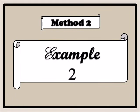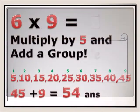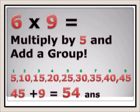Let's go to method two: six times nine equals — multiply by five and add a group. You count all nine multiples of five: five, ten, fifteen, twenty, twenty-five, thirty, thirty-five, forty, forty-five — that is forty-five — plus nine again gives fifty-four. Six times nine equals fifty-four.